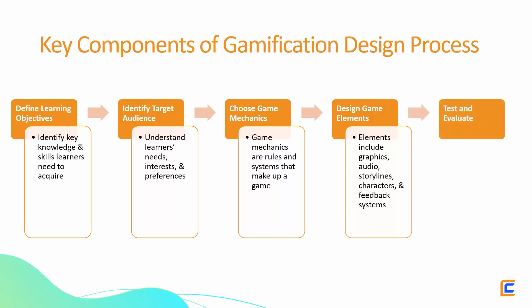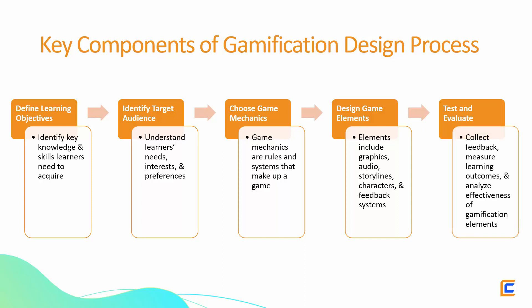Step 5: Test and Evaluate. The fifth and final step in the gamification design process is to test and evaluate the effectiveness of your gamified eLearning course. This involves collecting feedback from learners, measuring learning outcomes, and analyzing the effectiveness of the gamification elements. By testing and evaluating your eLearning course, you can identify areas for improvement and refine your gamification design process for future projects.